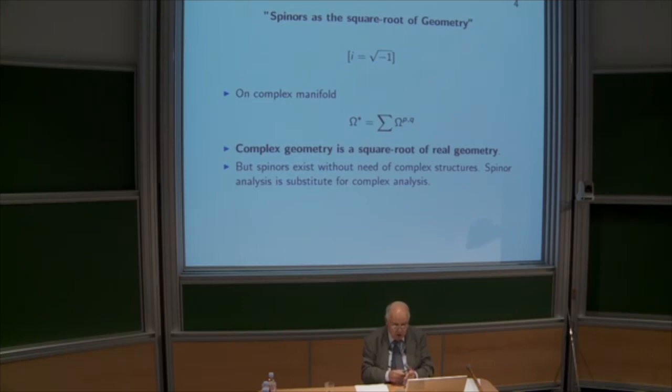on the manifold can be broken up into forms of type (p,q), where p involves the dz's and q involves the dz bars, the mixture of the two, the tensor product. So when you have a complex structure, you see the square root, and the square root is complex geometry.